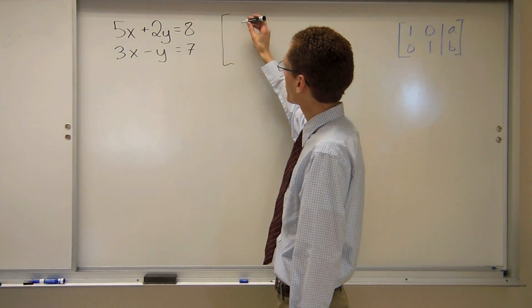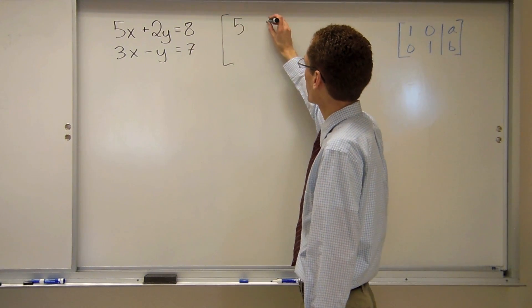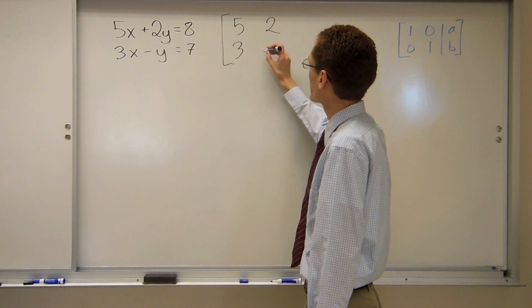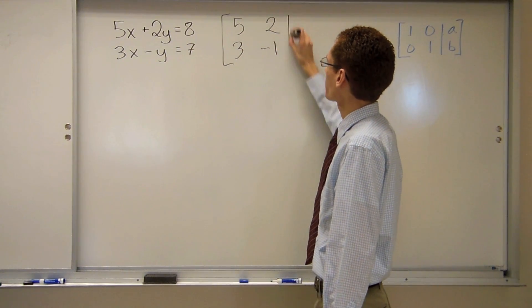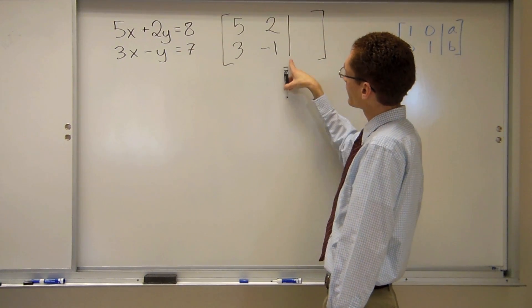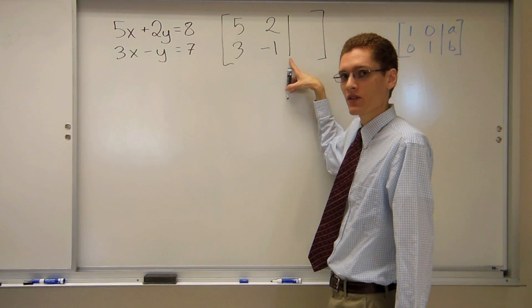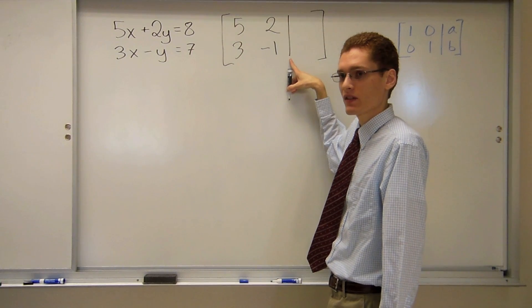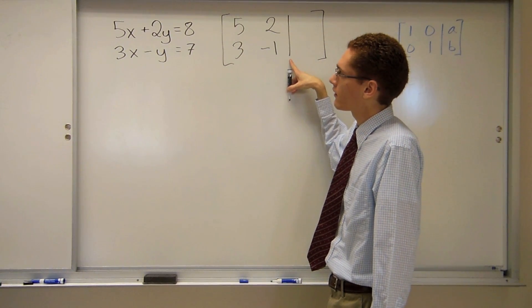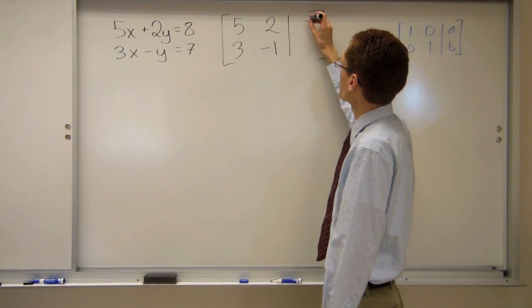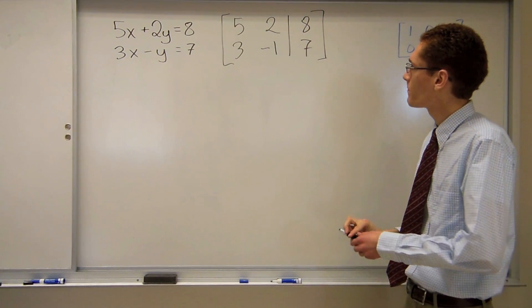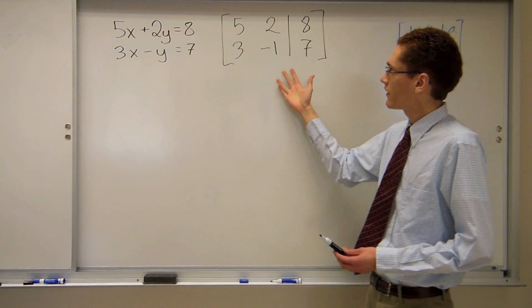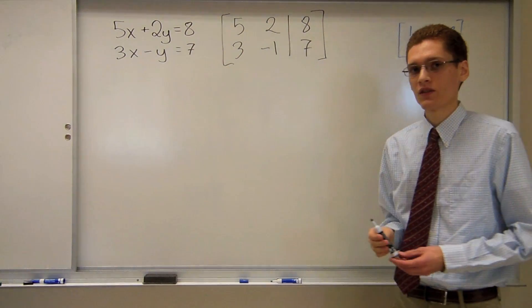And just taking the coefficients, in this case 5, 2, 3, and it's like there's a negative 1 times that y. And then drawing this line, which is what makes it an augmented matrix, and that lines up with the equal sign. Then I have 8 and 7. So I've created an augmented matrix using this system of equations.